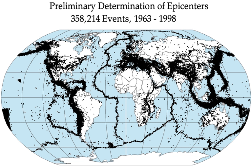Larger earthquakes occur less frequently, the relationship being exponential—for example, roughly 10 times as many earthquakes larger than magnitude 4 occur in a given time period than earthquakes larger than magnitude 5. In the low-seismicity United Kingdom, it has been calculated that the average recurrences are: an earthquake of 3.7 to 4.6 every year, an earthquake of 4.7 to 5.5 every 10 years, and an earthquake of 5.6 or larger every 100 years. This is an example of the Gutenberg-Richter law.